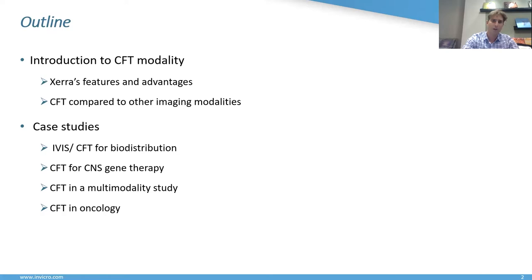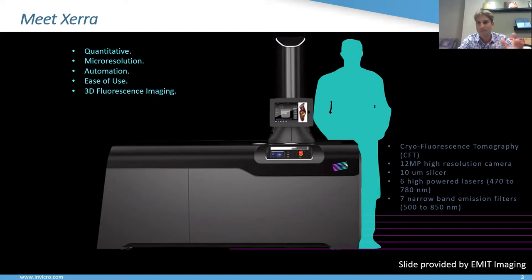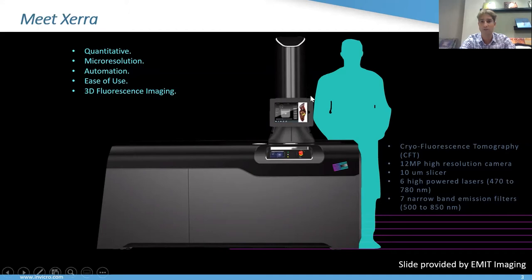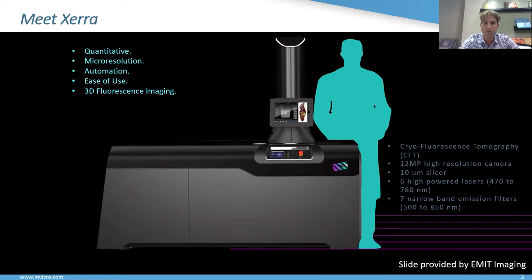So we're all on the same page on what CFT and XERA are — here are a few slides on XERA specs. XERA basically looks like a really sleek cryomacrotome with an optical system placed above in this tower. The block is in the middle, maintained at minus 20 degrees. We have a 12-megapixel high-resolution camera, as well as dedicated lasers and filters, and six channels, which provides great flexibility in selection of fluorophores from visible to NIR.